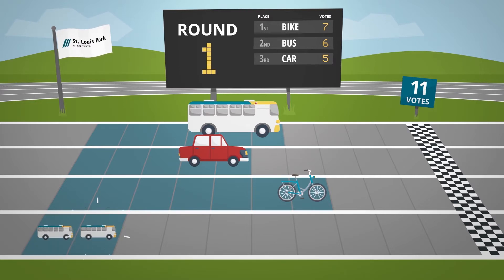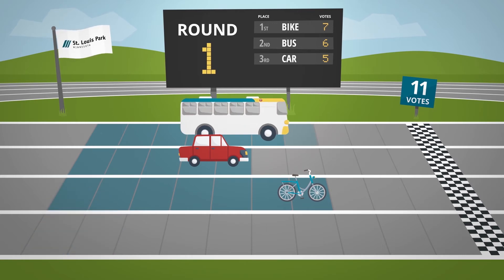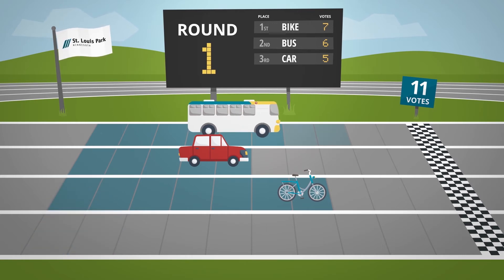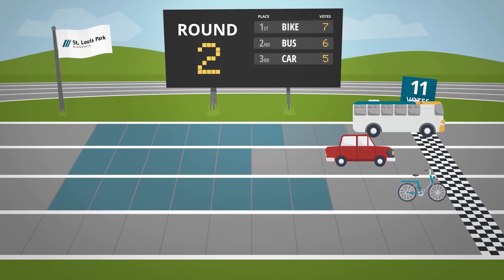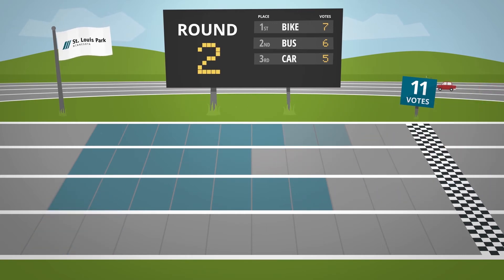Even though their friend didn't rank all three choices, their vote still counts. If a choice is left blank, we count the next highest ranking that is not blank.